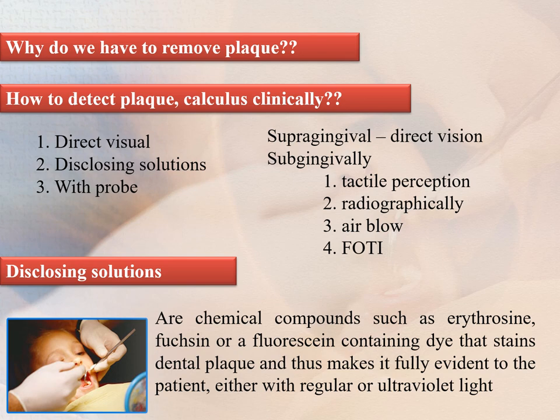How do we detect plaque and calculus clinically? Plaque can be seen clinically by direct visual examination, with the help of disclosing solutions, and with the help of probes. Supragingival calculus can be seen by direct vision; subgingival calculus with the help of tactile perception, radiographically, air blowing, and through fiber optic transillumination.